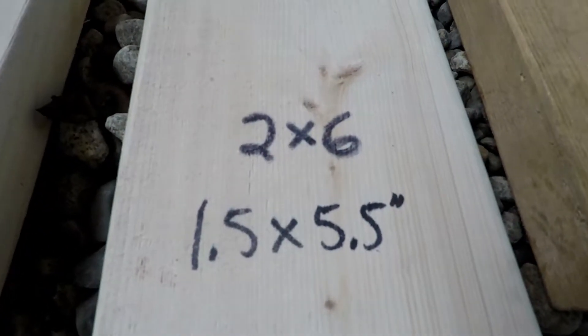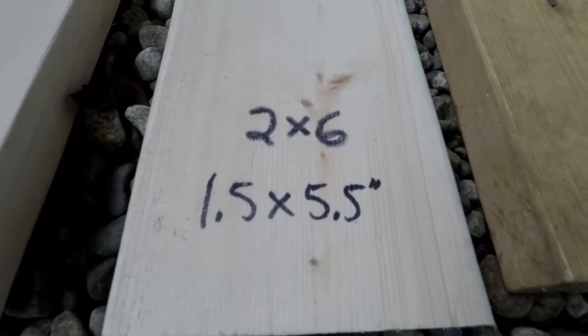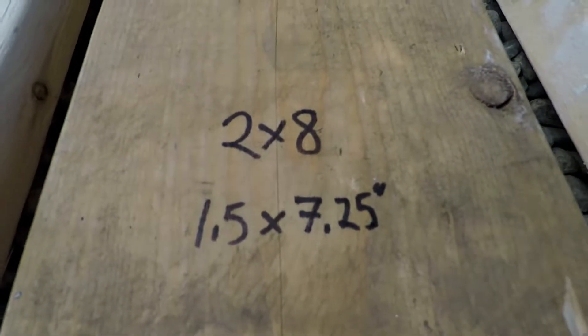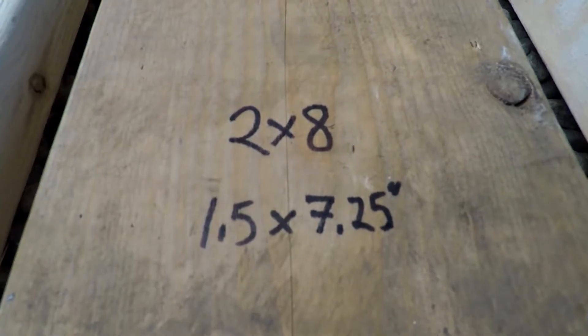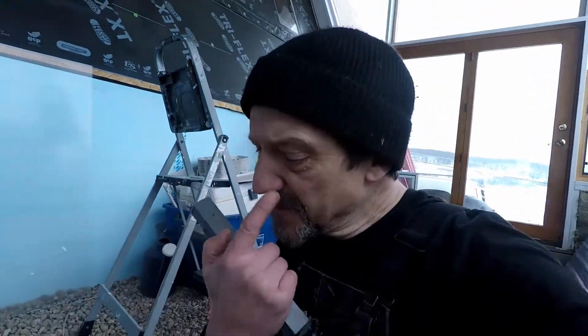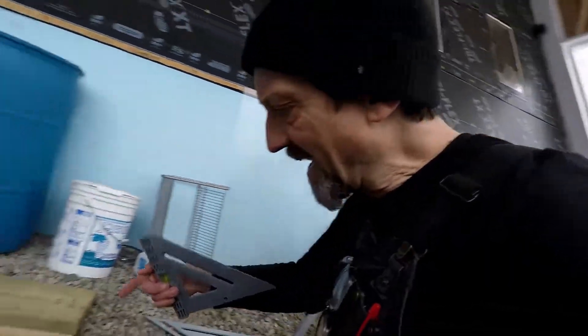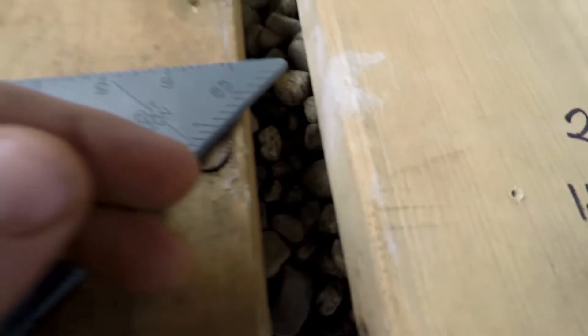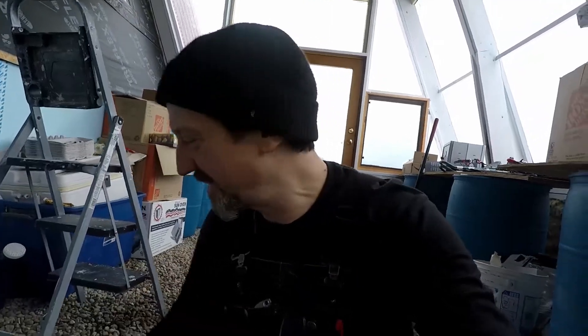A two by six is 1.5 by 5.5 inches. A two by eight is 1.5 by 7.25 inches. Let's take a look at that — the rest of them may seem to have shrunk by a half inch, and now all of a sudden you hit the two by eight and you're at 7.25. It's honestly about seven inches and three-sixteenths, so it's pretty close to 7.25. It just shrunk a little more.